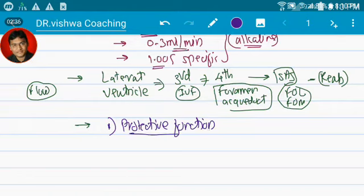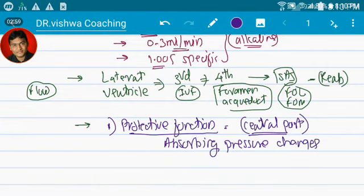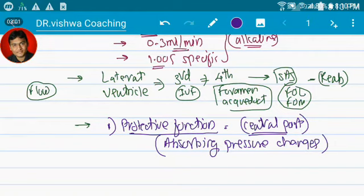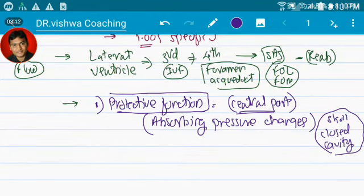How does it protect? Remember CSF is there in the central part of the brain. The ventricles of the brain are there in the central part, so this is responsible for absorbing the pressure changes. Because the skull is a closed cavity, if there is some pressure changes, CSF or ventricles absorb it.